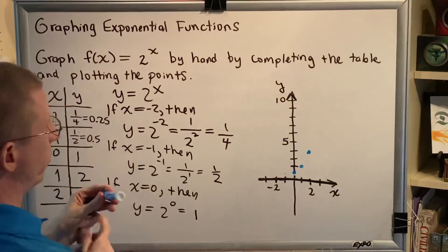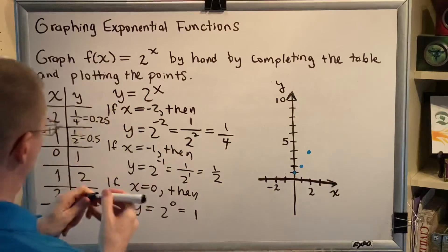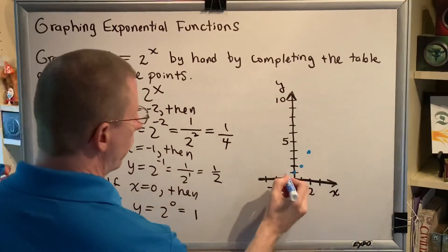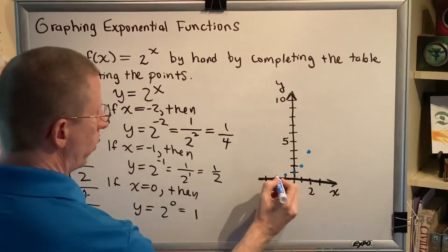That is our y-intercept. Next, (-1, 1/2) which would be here. And (-2, 1/4) which would be here.